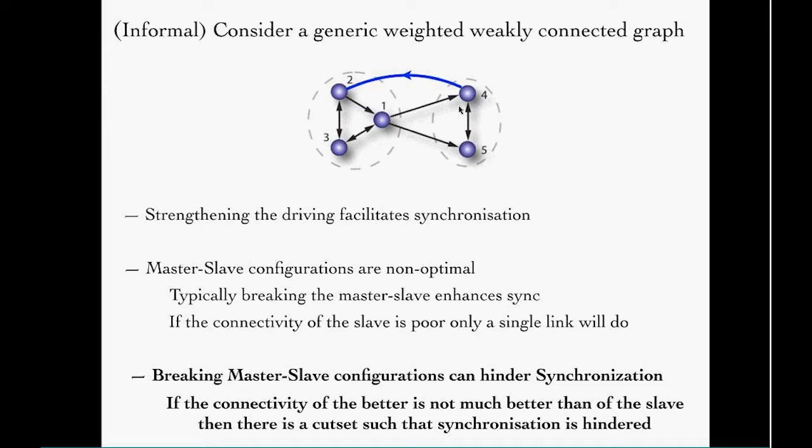In particular, there is a spectral condition we don't quite understand but it pops up in the equations: you can only break the master-slave synchronization configuration by destroying synchronization when the slave network must be way more poorly connected than the master network.